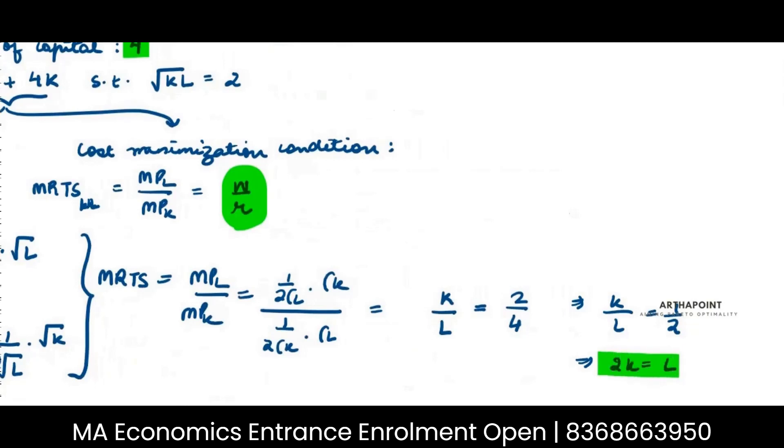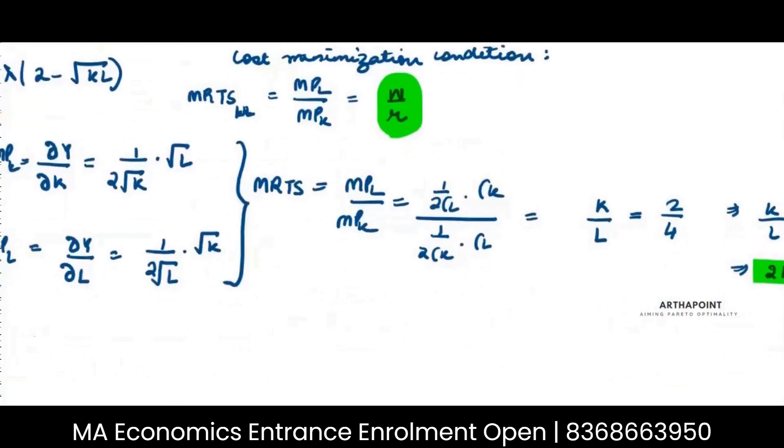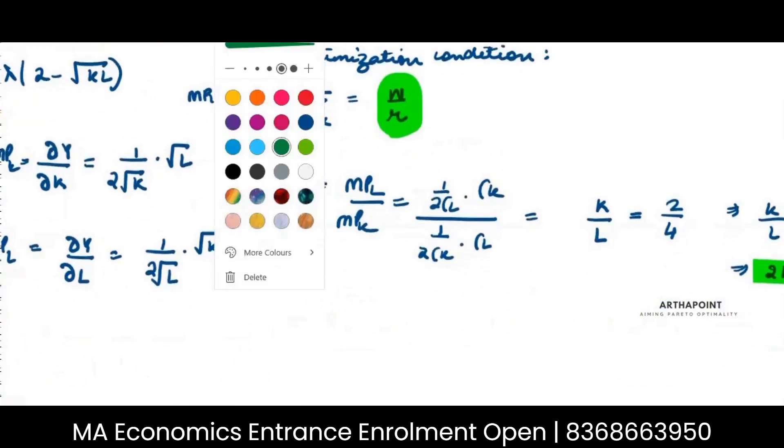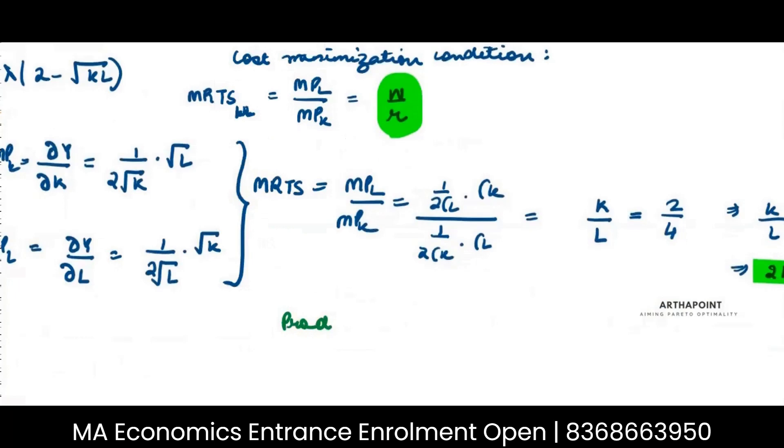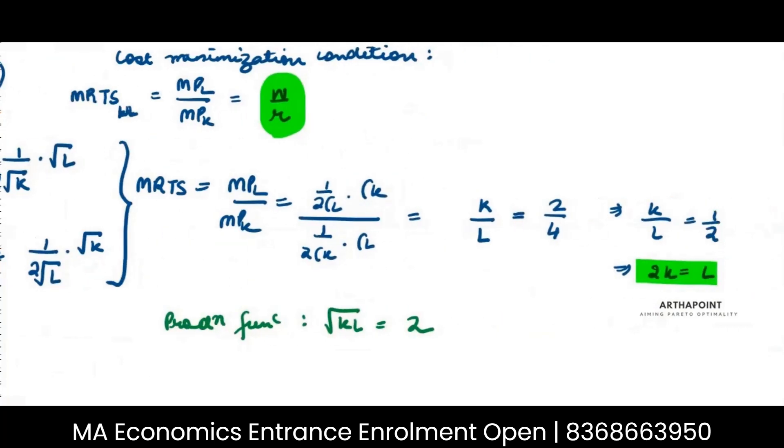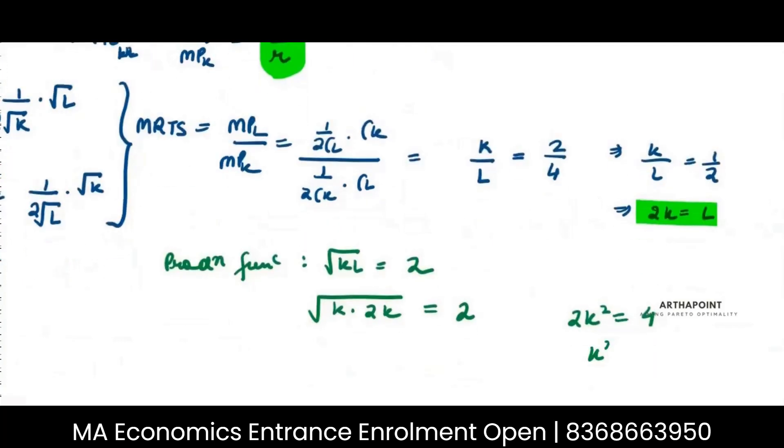So by using the cost minimization condition, by putting MRTS equal to W by R, I have got this condition finally that 2K is equal to L. Now it is already given to me that I want to produce 2 units of output, so my production function is given to me as root KL is equal to 2. Instead of L I can write 2K only, so I would get K into 2K under root is equal to 2. I can square on both sides, so I will get 2K square is equal to 4, so I will get K square is equal to 2.